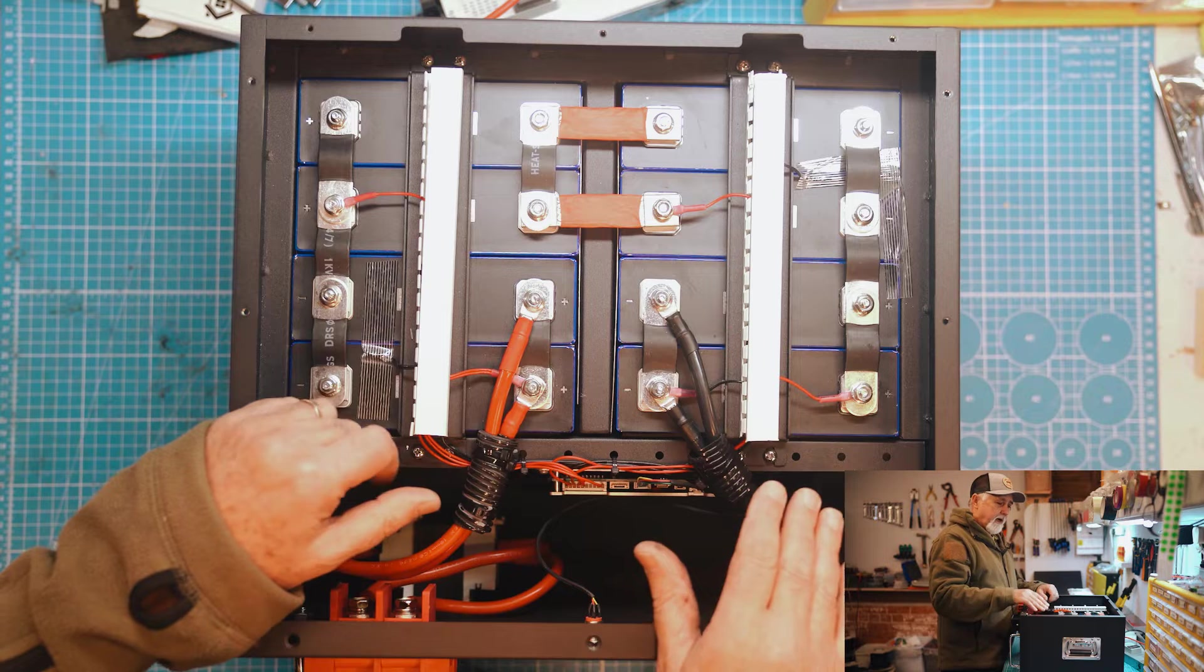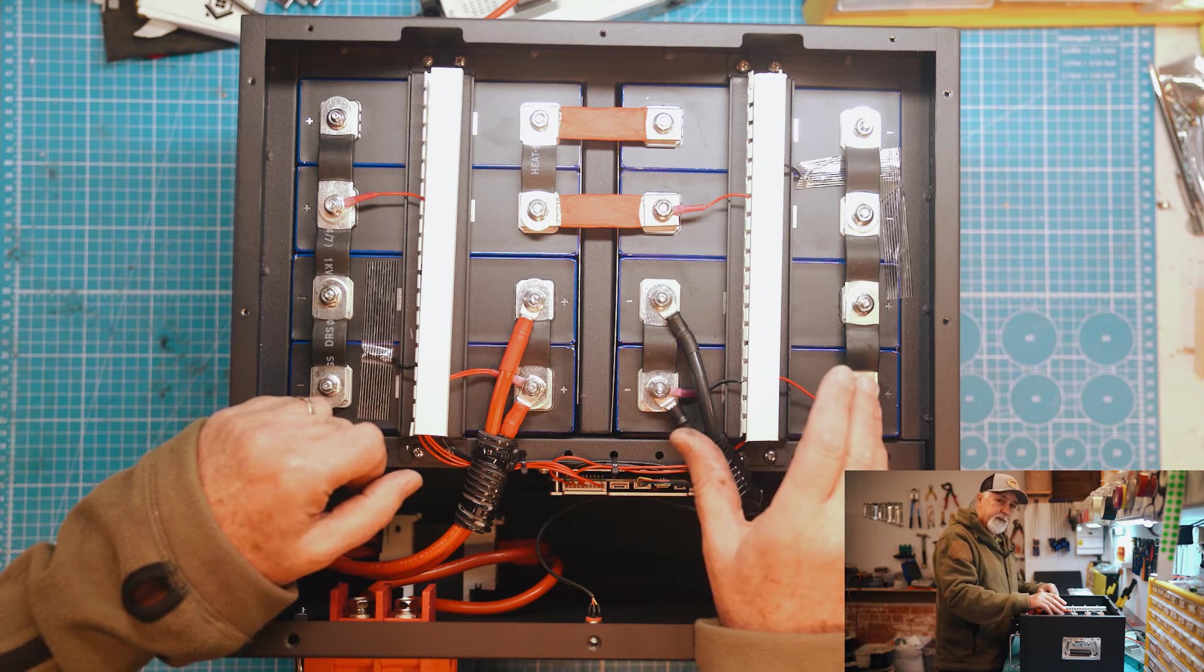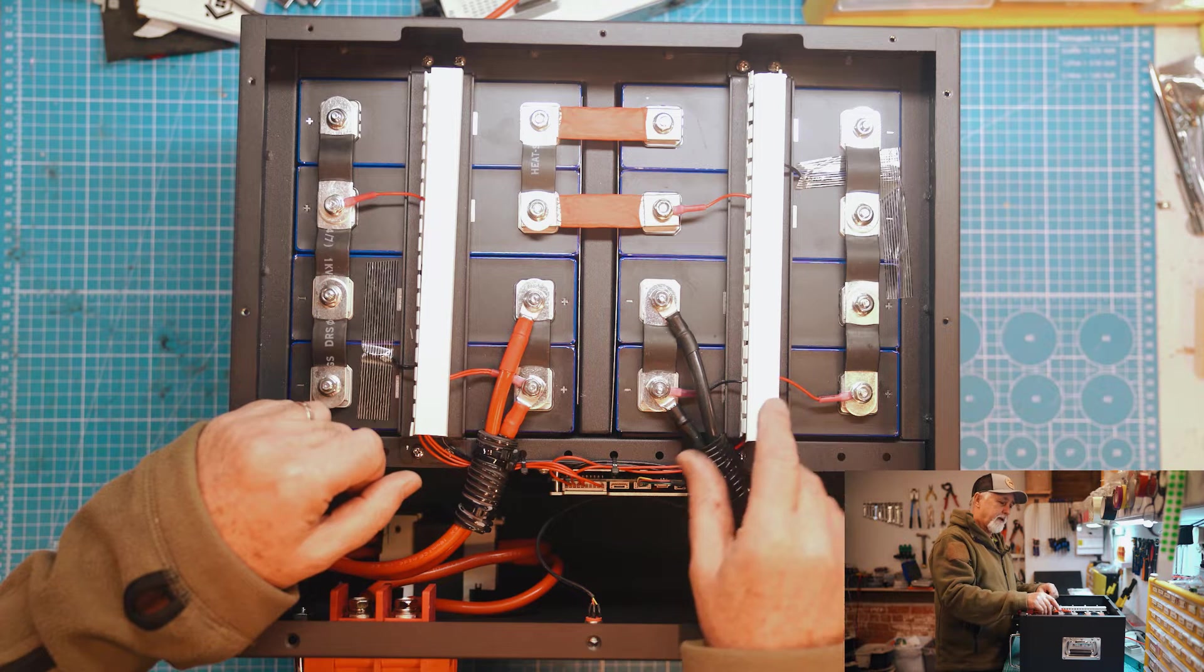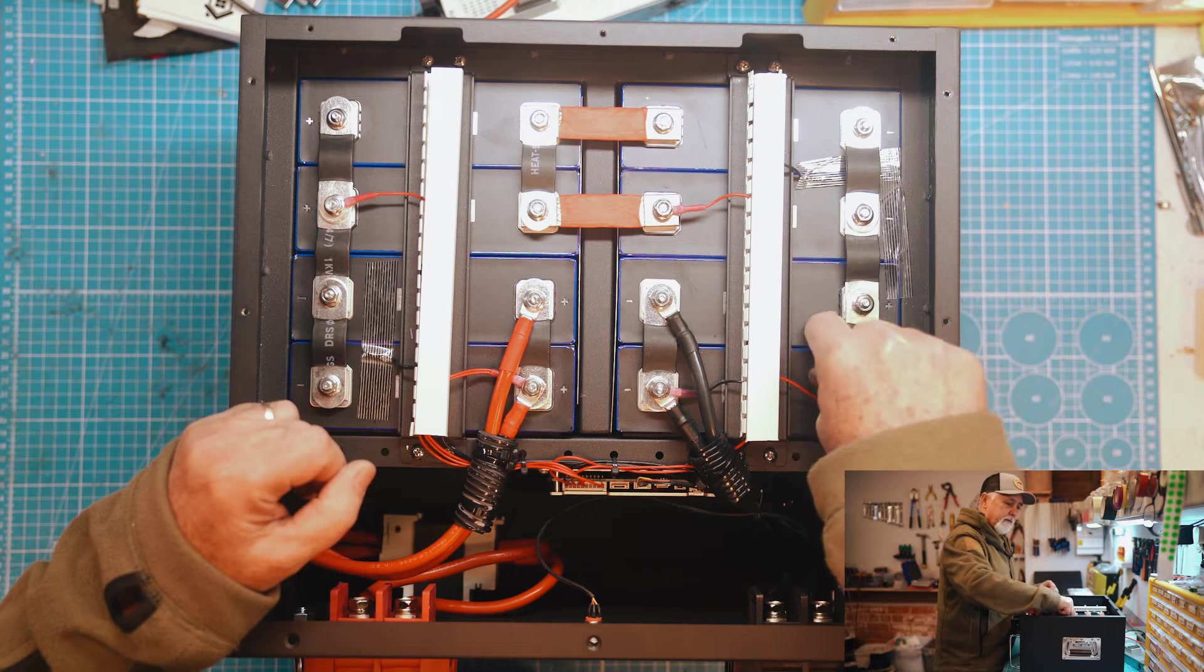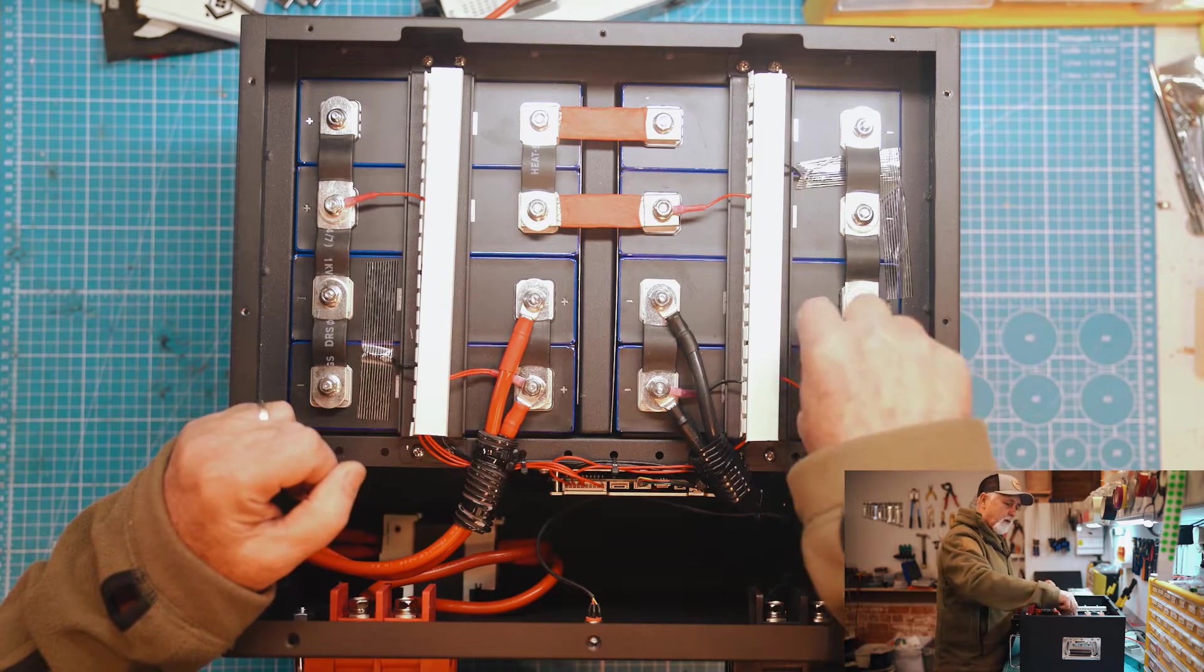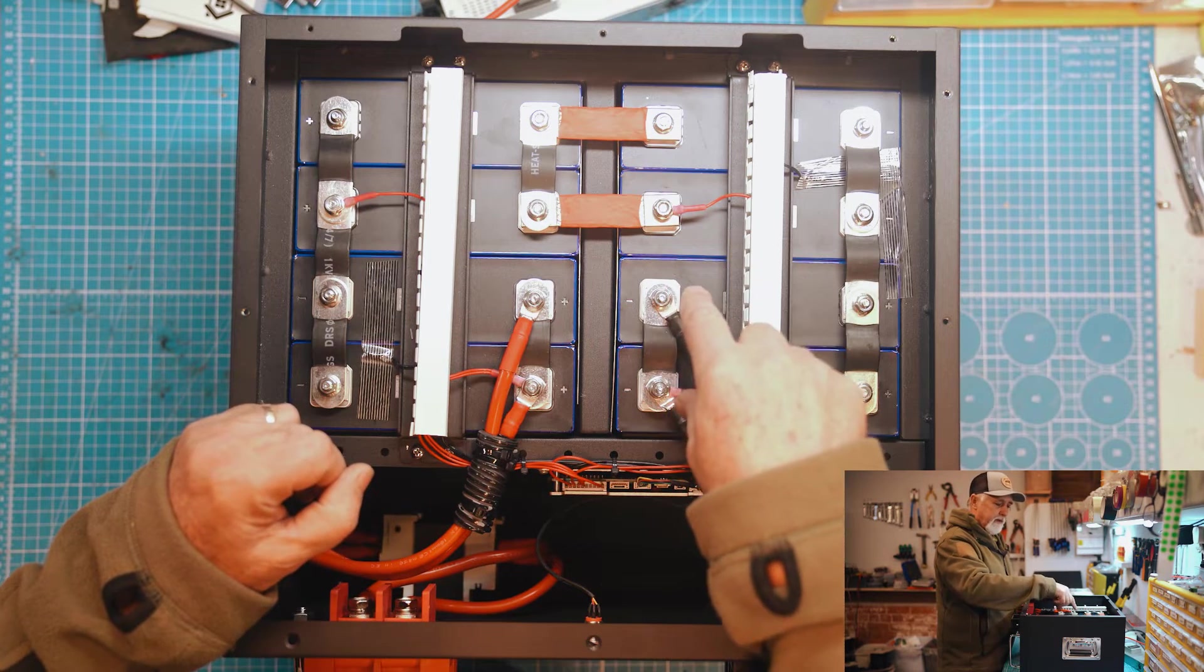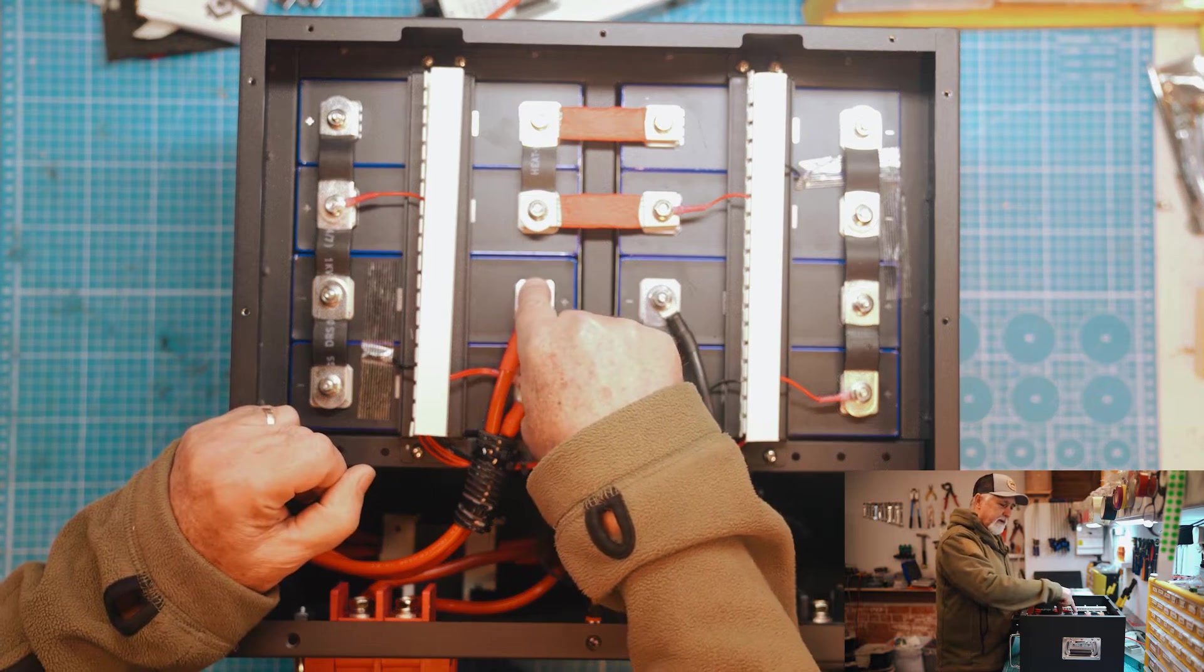So in this one, we've got eight cells and they are paired up. So this is what is known as a 2P4S. So two cells in parallel and in a string of four. So these are the parallels. So these two are in parallel, those two, those two and those two. And then they form a series of four. So one, two, three, four. And as you can see, our main negative terminal is here. Our main positive terminal is here.